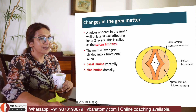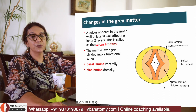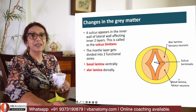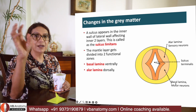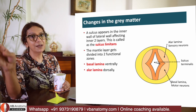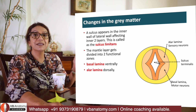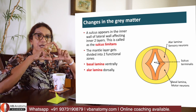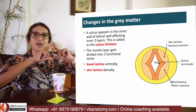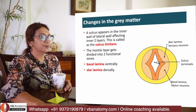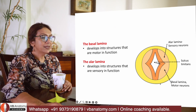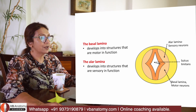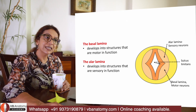An anterior bunch of cells is called the basal lamina, and a posterior bunch is called the alar lamina. Basal lamina develops motor neurons; alar lamina develops sensory neurons. The sulcus limitans converts the rounded central canal into a diamond-shaped structure.